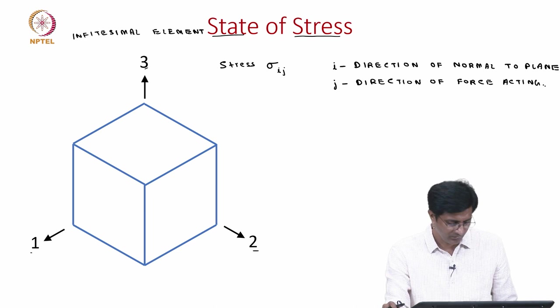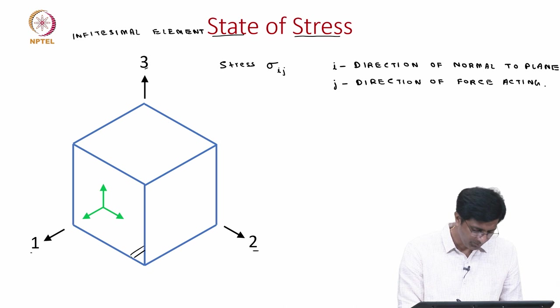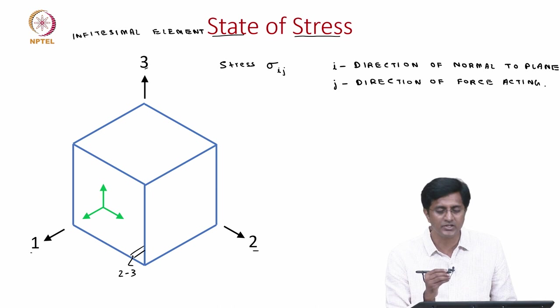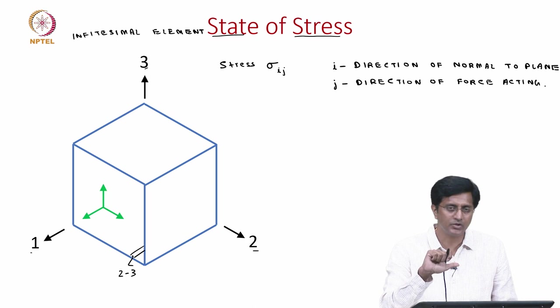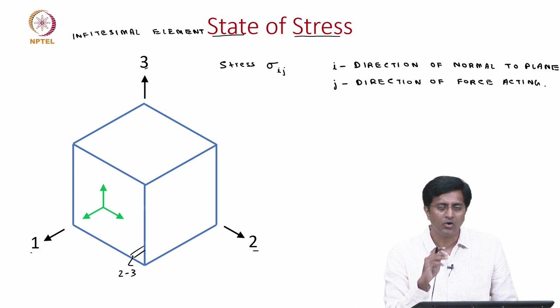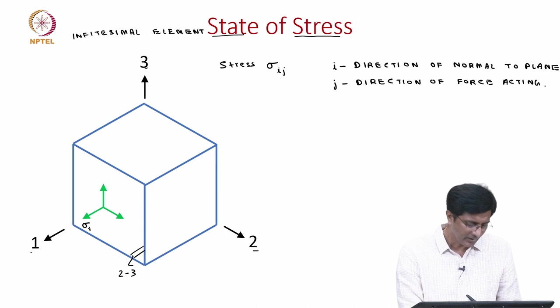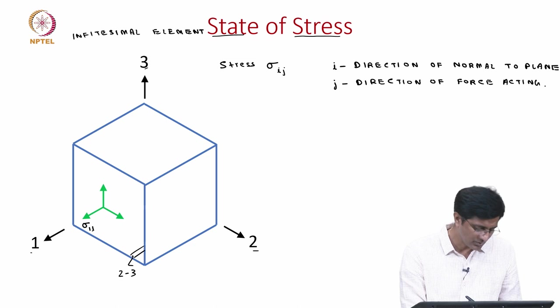Let us focus on the face which is a 2-3 plane. Because it is parallel to the 2-3 plane we call it the 2-3 plane, and the direction of the normal is direction 1 since the perpendicular to this face is along coordinate 1. On each plane we have 3 stresses. The one perpendicular to the plane is sigma_11 — the first subscript 1 defines the direction of the plane and the direction of the force is also in the 1 direction. So it is sigma_11.